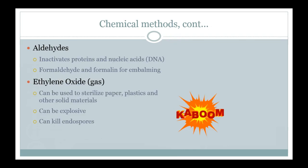A few other chemical methods: aldehydes — if you've been in a science lab involving dissection, you may have been exposed to formaldehyde or formalin. It's pretty unpleasant but can be used to kill and also preserve specimens. Ethylene oxide is actually a gas that can be used as well, though it can be highly reactive and volatile and must be used under carefully controlled circumstances.